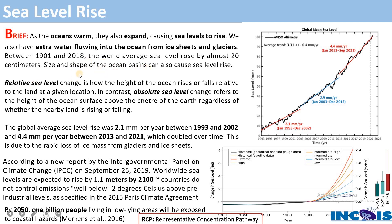To understand this further, you need to know two concepts: relative sea level and absolute sea level. Relative sea level is the change in height of the ocean — whether rise or fall — relative to the land at a given location. For example, if you are at a coastal location and nearby land is under increasing pressure from human activities,